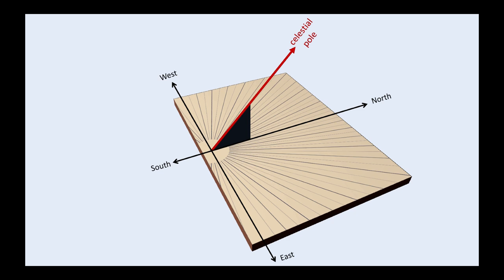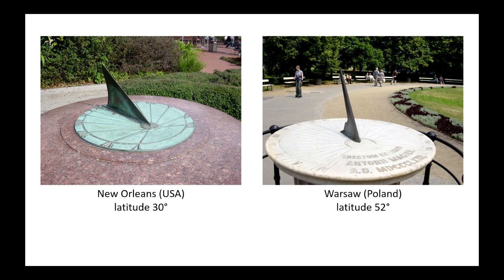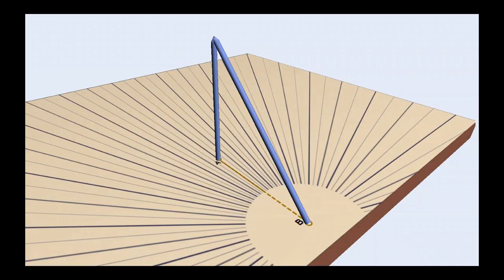The angle made by the style with the plate depends on the latitude. We see here two different angles for two locations of different latitude. In an extreme case, when the sundial is installed at the pole, its style is vertical. The horizontal sundial is, in this case, also an equatorial sundial.